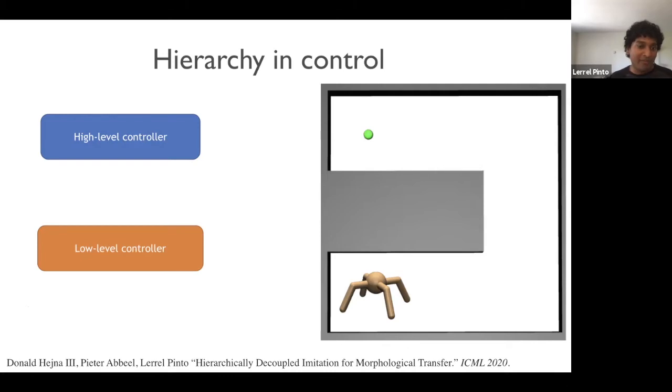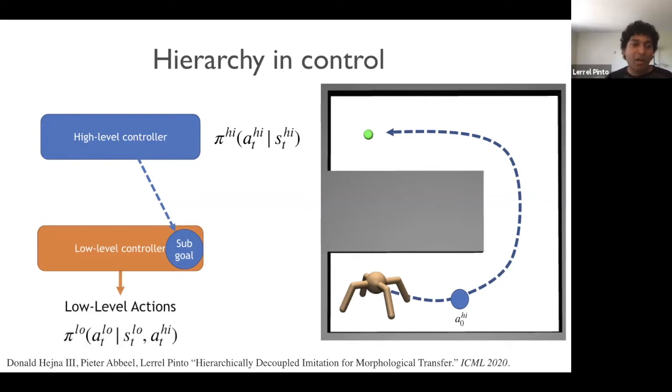Now to operationalize this idea, we use hierarchy in control. So we have a high-level controller, which outputs a high-level path for the agent to solve the task. And it takes as input the high-level state of this agent and outputs a sub-goal that this agent needs to reach. Now this sub-goal is an input for the low-level controller. This low-level controller then uses the sub-goal and outputs low-level actions, which is in this case the joint torques for this agent, which will make this agent go from its initial location to that sub-goal. Now we apply this high-level in a sequence, and after it knows what the next sub-goals are, the low-level can then follow these sub-goals until it reaches the goal.